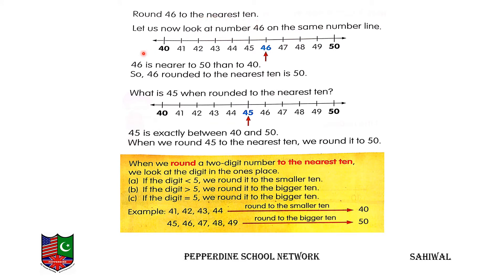Round 46 to the nearest 10. We have 46 between 40 and 50. On the small number line, counting backward from 46 to 40 takes 6 numbers; counting forward from 46 to 50 takes 4 numbers. Since 4 is less than 6, we round 46 to the nearest 10, which is 50.